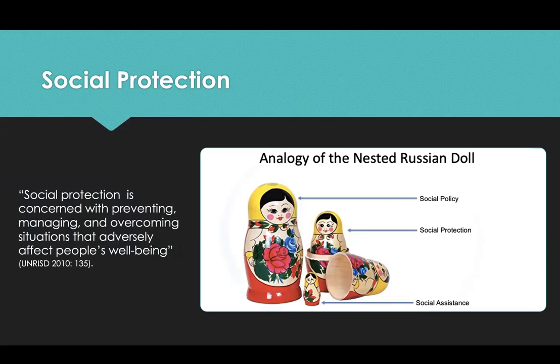While it is not uncommon to hear some use social policy and social protection interchangeably, it is important to have a more precise understanding of their relationship. Using the analogy of the nested Russian doll, social policy is the big doll. Social protection, as a component of social policy, is the middle or smaller doll. And social assistance — the non-contributory social provisioning support offered by public authorities — is the smallest doll. In this sense, social assistance is a component of social protection, while social protection is a component of social policy.